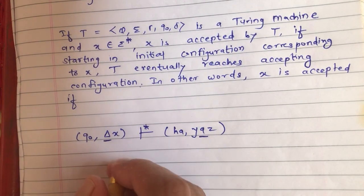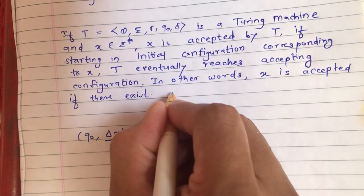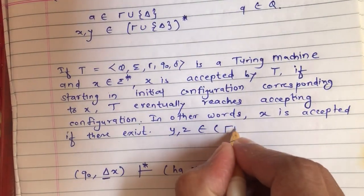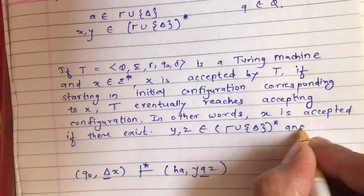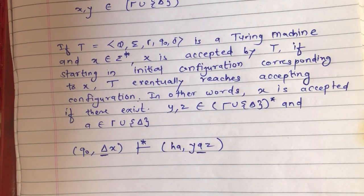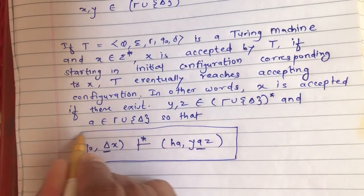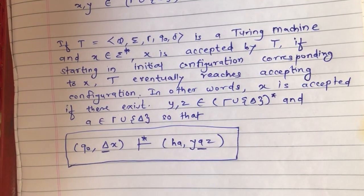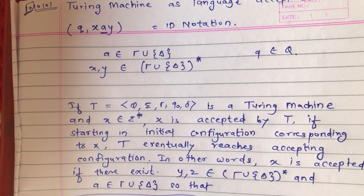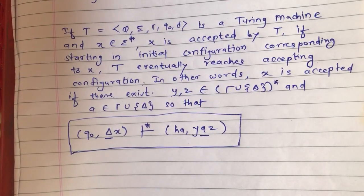So if you enter the accepting state with the tape head pointing to some symbol A, no matter what else is on the tape, and if there exist strings Y and Z — which are strings over tape symbols — and A is a single symbol from the tape, then the acceptance configuration holds and we say string X is accepted. In the next video we will see an example of constructing a Turing machine and solving the ID notation using this formula.